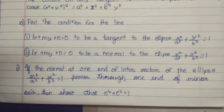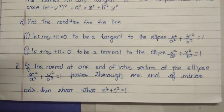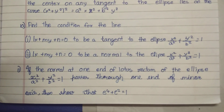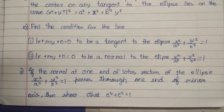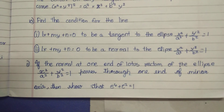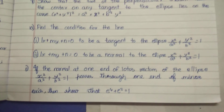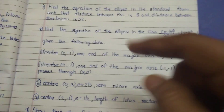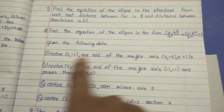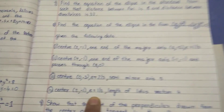The 11th one: if the normal at one end of the latus rectum of the ellipse x²/a² + y²/b² = 1 passes through one end of the minor axis, then show that e⁴ + e² = 1. Okay, we have to show that one.